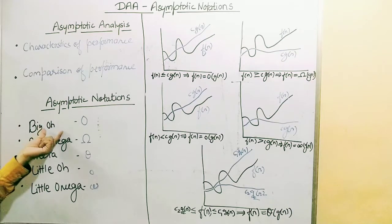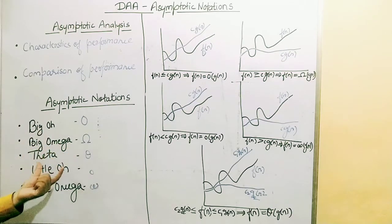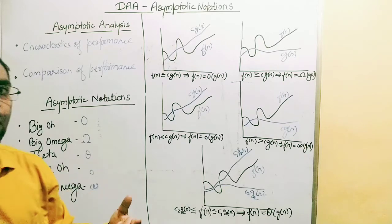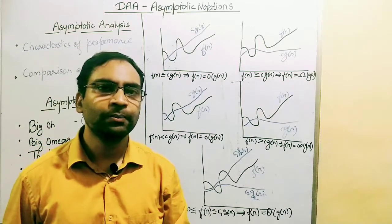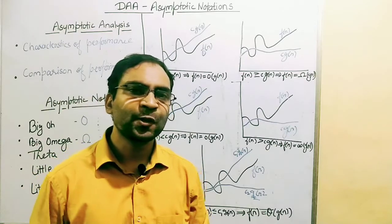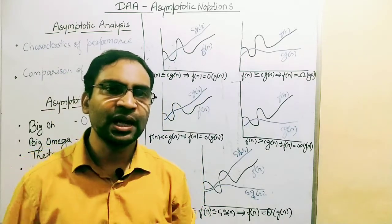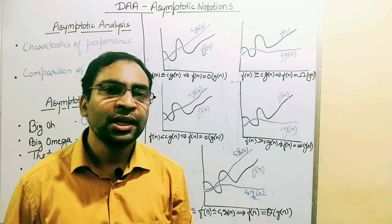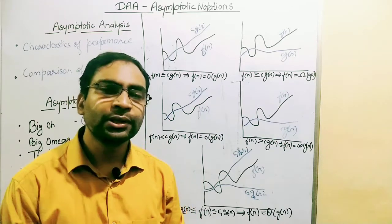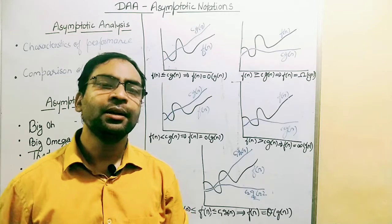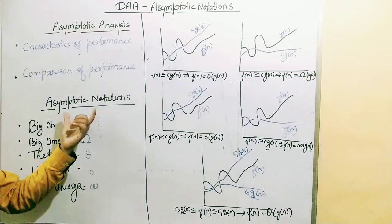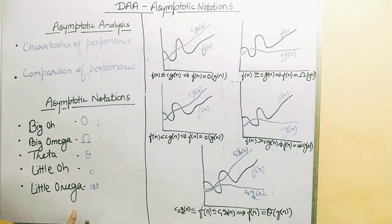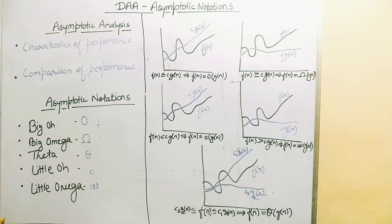These asymptotic notations are five in number: Big O, Big Omega, Theta, Little o, and Little omega. As we discussed in the previous lecture, space and time complexities are important and we measure time complexities in three cases: worst case, average case, and best case. These asymptotic notations are also related to those best, worst, and average cases.